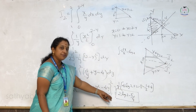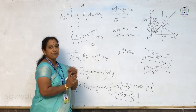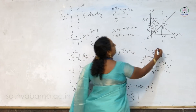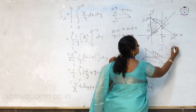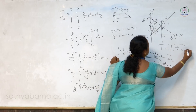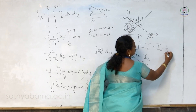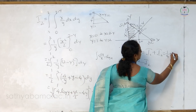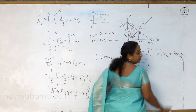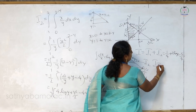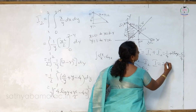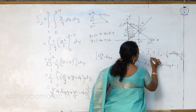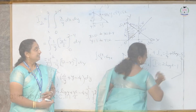Almost at the end of the problem. The last step is to simply combine the two regions: I is equal to I1 plus I2. I1 is 1 by 4 and I2 is 2 log 2 minus 5 by 4. So the answer is 2 log 2, and 1 by 4 minus 5 by 4 equals minus 1. Therefore the final answer is 2 log 2 minus 1.